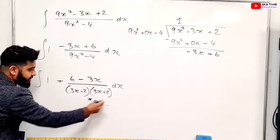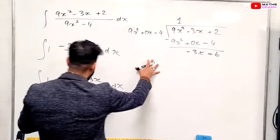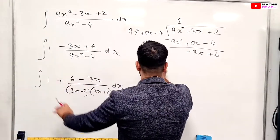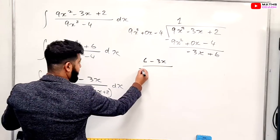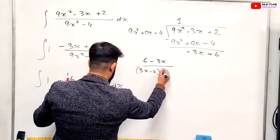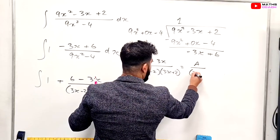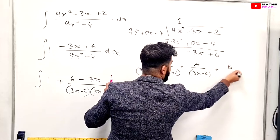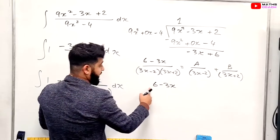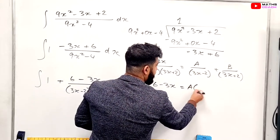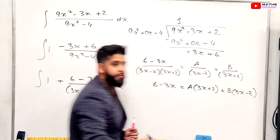Now we've got this, and we need to use partial fractions to do that as well. So let's go over here and deal with that using partial fractions. Just ignore the 1 for now. So we have 6 minus 3x, and then we have 3x minus 2 and plus 2. And we're going to have a over 3x minus 2 plus b over 3x plus 2. So then we are going to have 6 minus 3x is equal to a times 3x plus 2 plus b 3x minus 2.